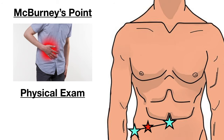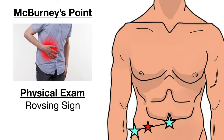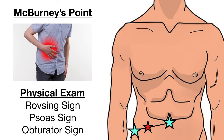There are a few other physical exam findings that can be present. The first one is the Rovsing sign — when palpation to the left lower quadrant worsens right lower quadrant pain. The psoas sign is when the patient lays on their left side and the right leg is extended at the hip, eliciting abdominal pain. The obturator sign is when the right leg is internally and externally rotated, and this too elicits abdominal pain.